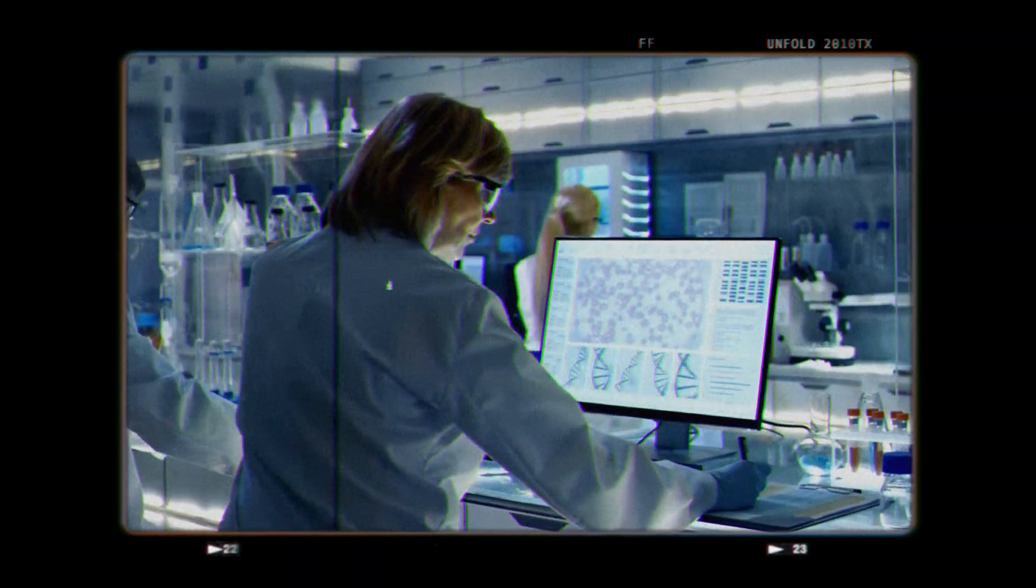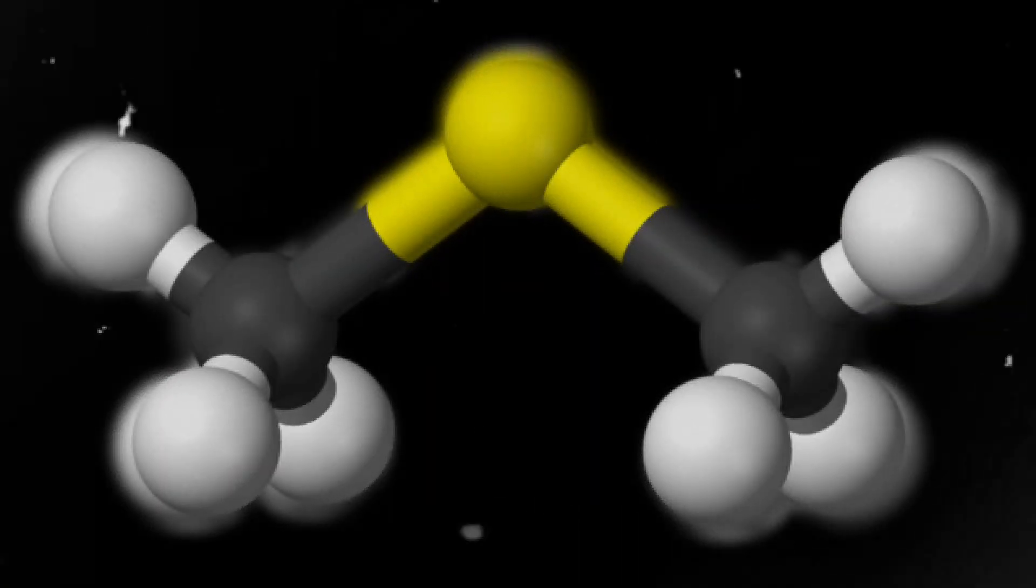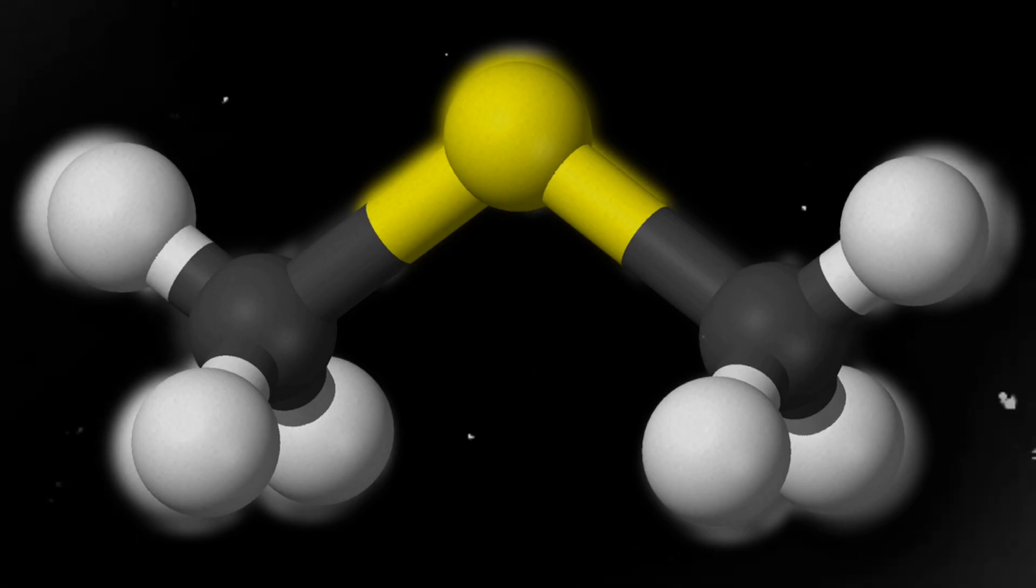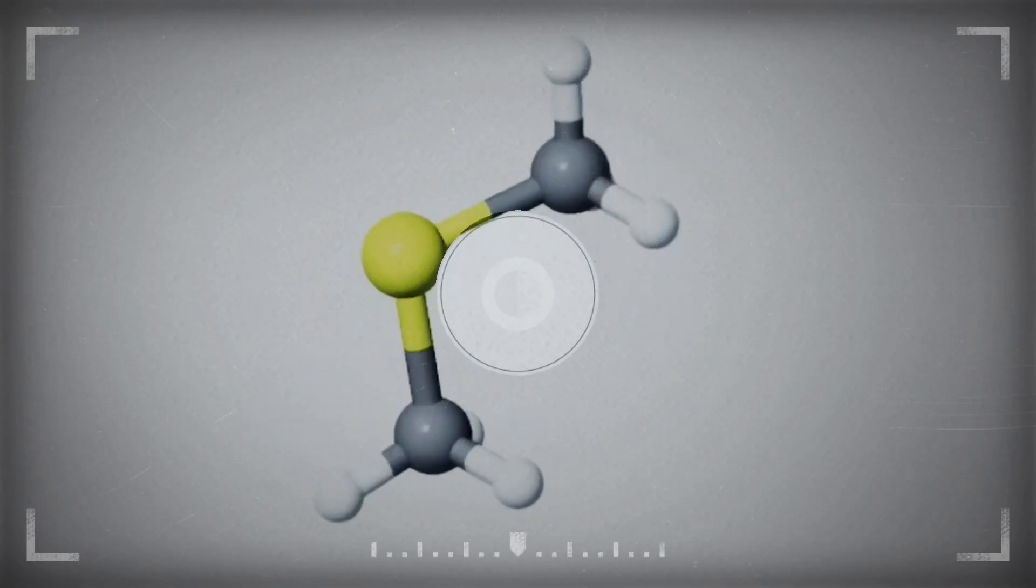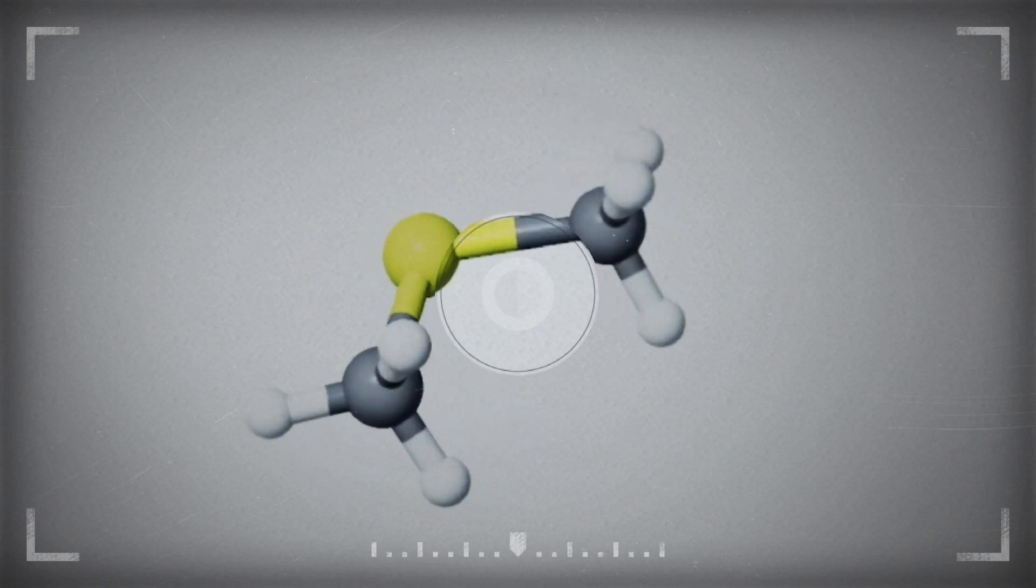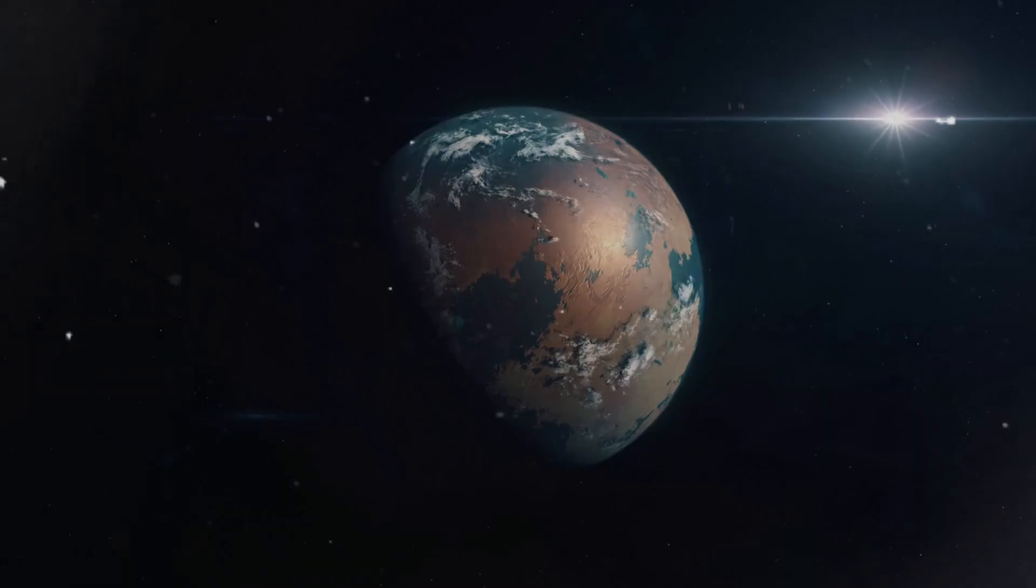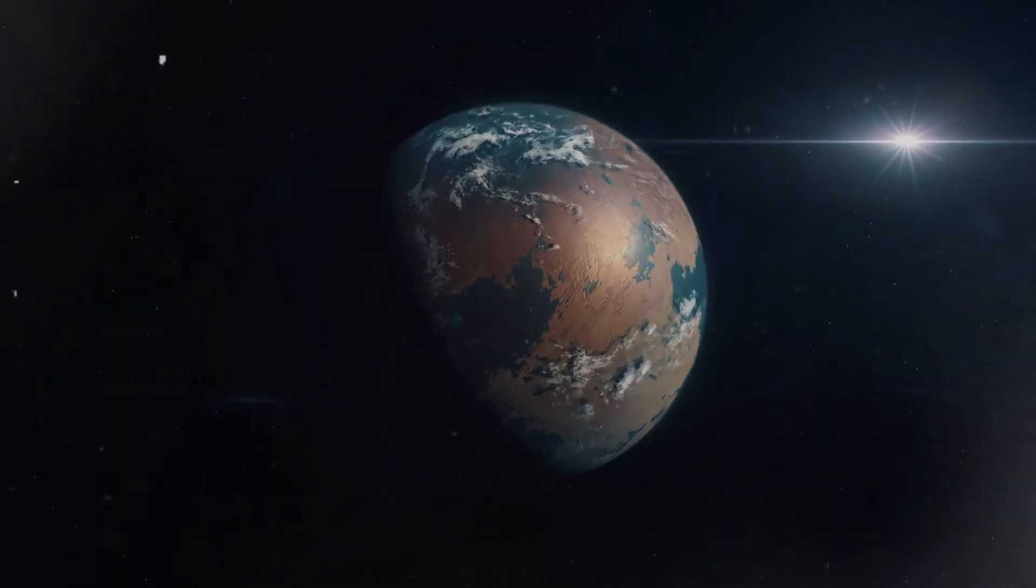While these observations are intriguing, more data is needed. The detection of a tentative level of dimethyl sulfide raises questions. This molecule is exclusive to Earth's life, and its presence has been predicted to serve as a strong biosignature in exoplanets, particularly habitable ones, including henworlds.